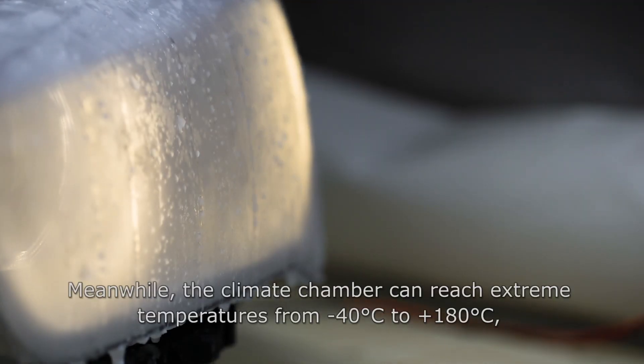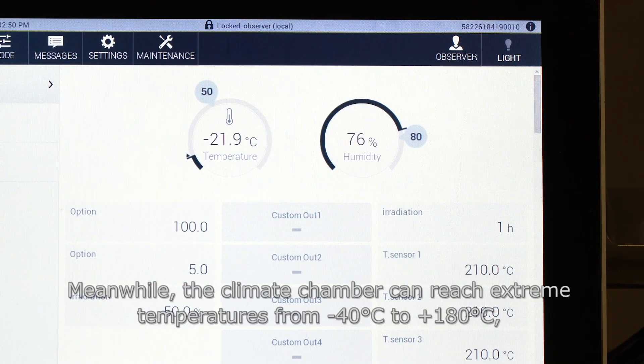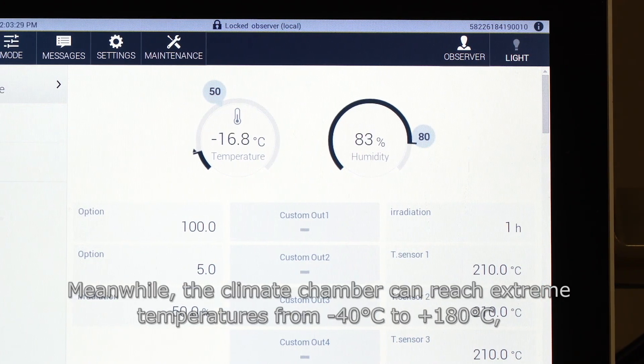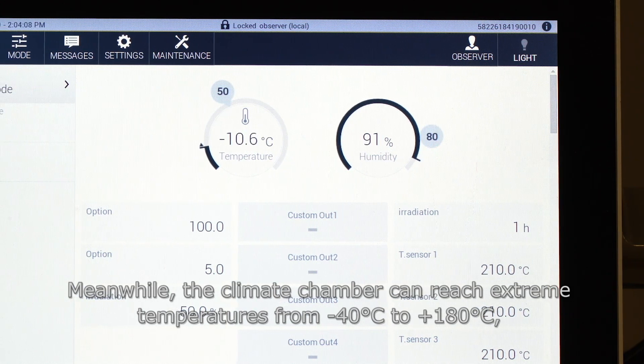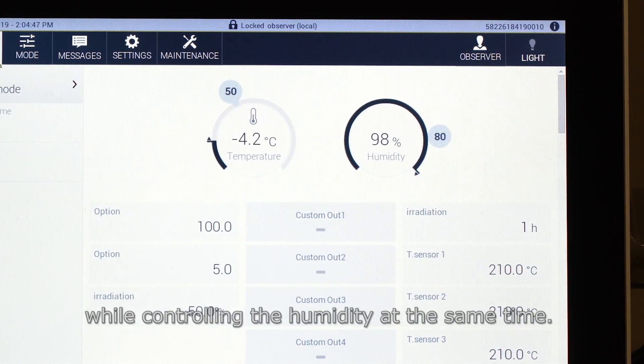Meanwhile, the climate chamber can reach extreme temperatures from minus 40 degrees Celsius to plus 180 degrees Celsius, while controlling the humidity at the same time.